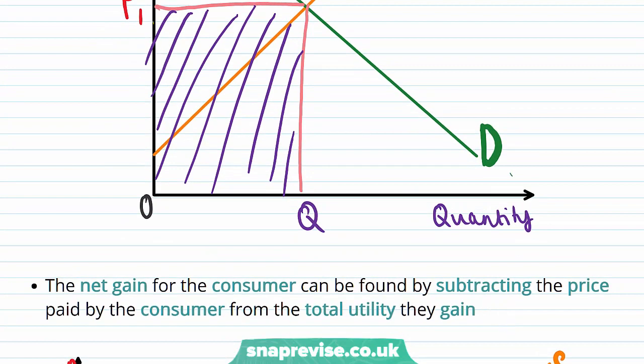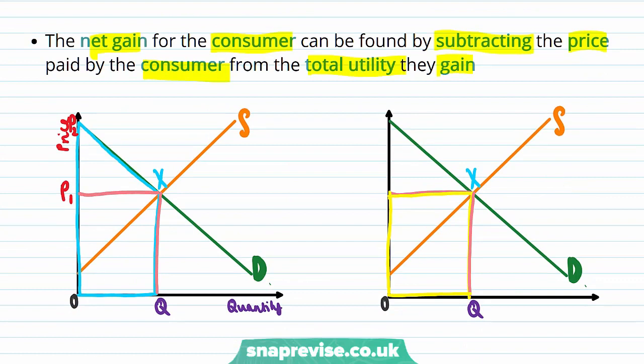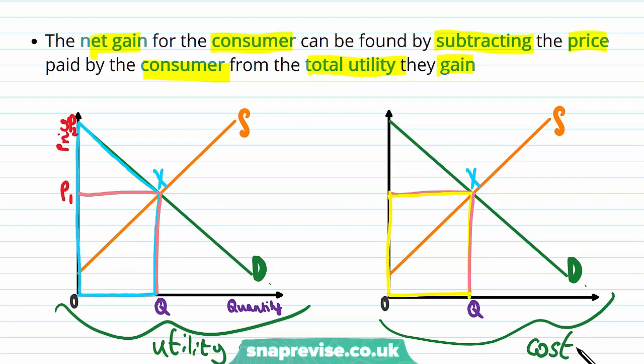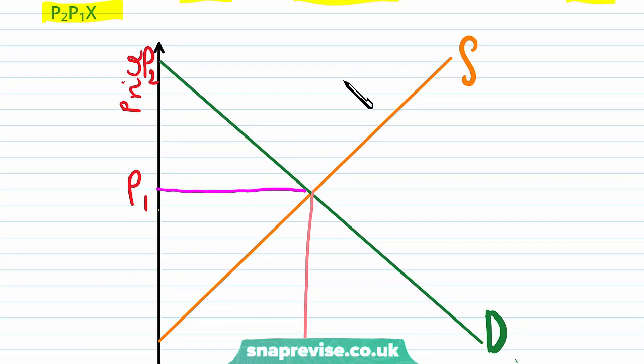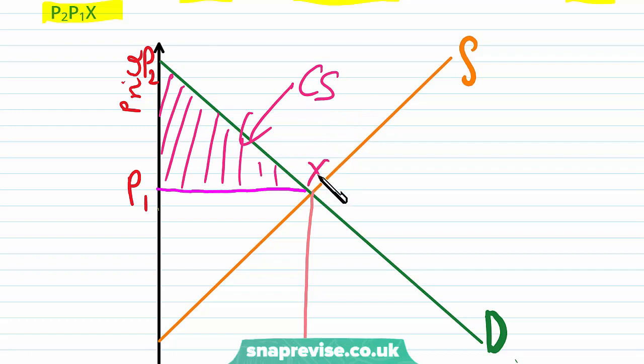So the net gain for the consumers in the market can be found by subtracting the price paid by the consumer from the total utility they gain. So this is the total utility that they gain, this is their benefit. And then this section is their cost. We're doing a balance between benefits and cost. So we're going to subtract these two to get our consumer surplus for the market. So this would mean that the net gain for the consumer is represented by the triangle P2, P1 and X. I'm going to mark that out now. So this entire area here is our consumer surplus. So P2, P1, X. That is the market consumer surplus.